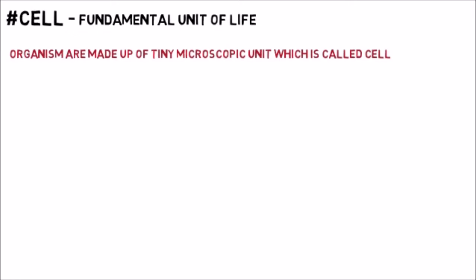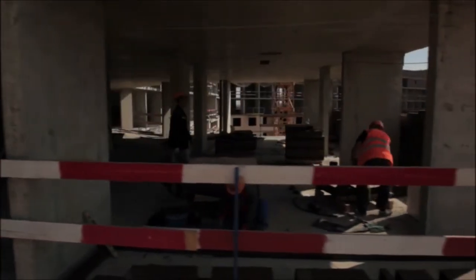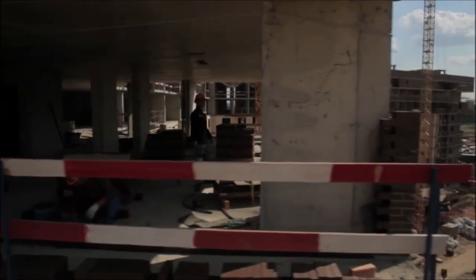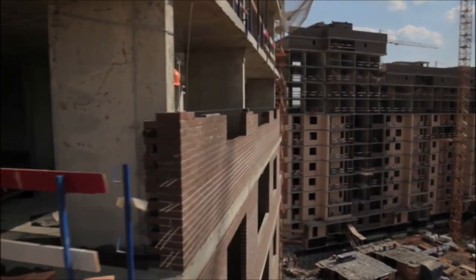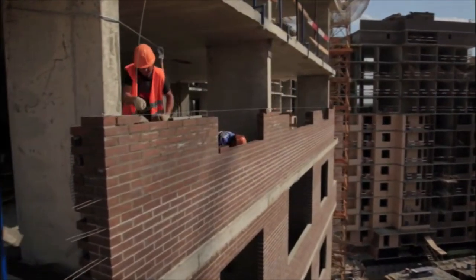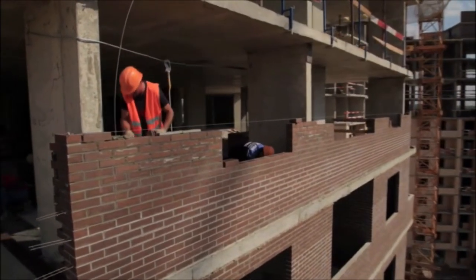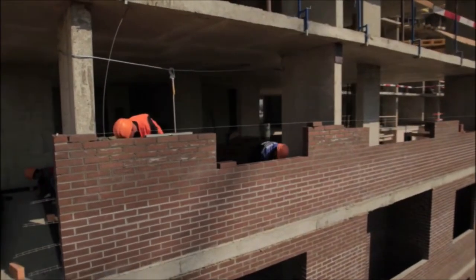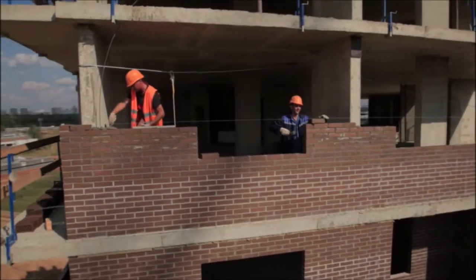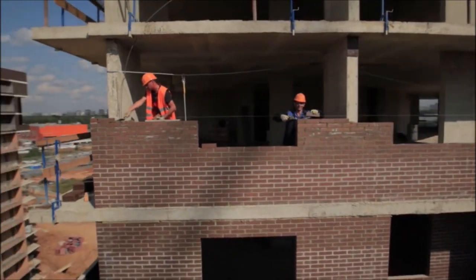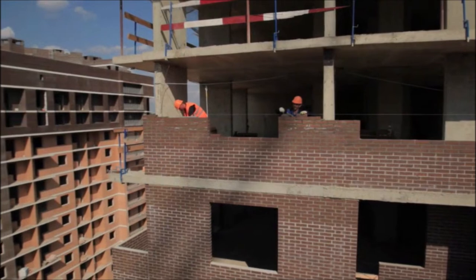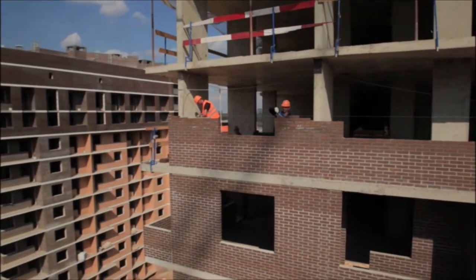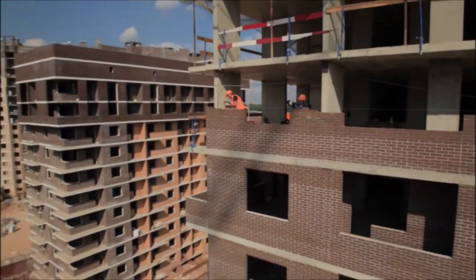Let us consider one example. If we want to build a building, what do we need? Basically, we need bricks. If we connect two bricks with cement, we can build a brick wall. We will build four walls, then we will build a room. We will build three or four rooms, then we will build a flat. There will be many flats on each floor, and then we will build a building.